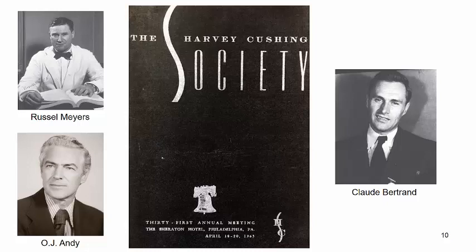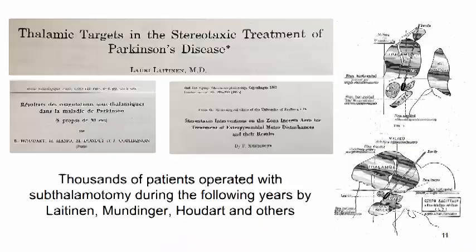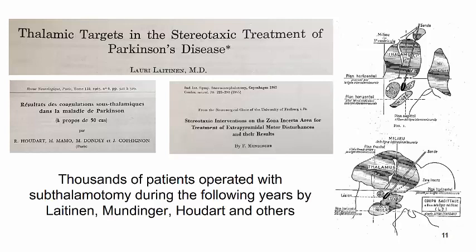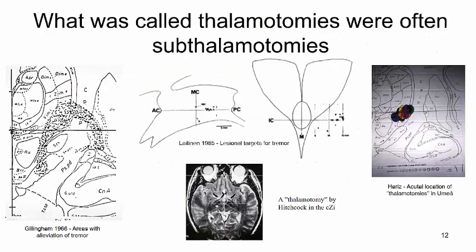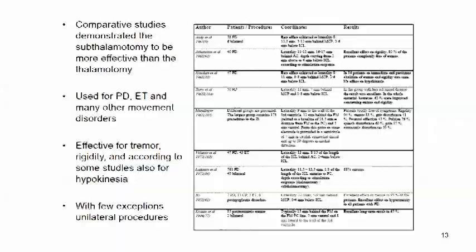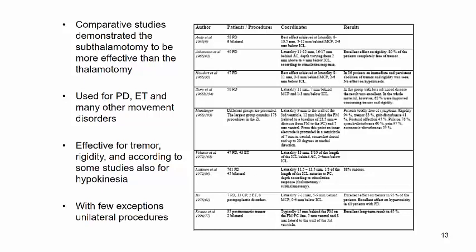The subthalamic area was intensely discussed at the meeting of the Harvey Cushing Society in 1963, and thousands of patients were operated on with subthalamic area procedures in the following years by Leitenen, Mundinger, Hodar, and others. When reading the literature from the lesion era, it is important to remember that what was called thalamotomies were often in reality subthalamotomies. The term thalamotomy was often used to encompass all subthalamotomies, and some groups combined the two targets.